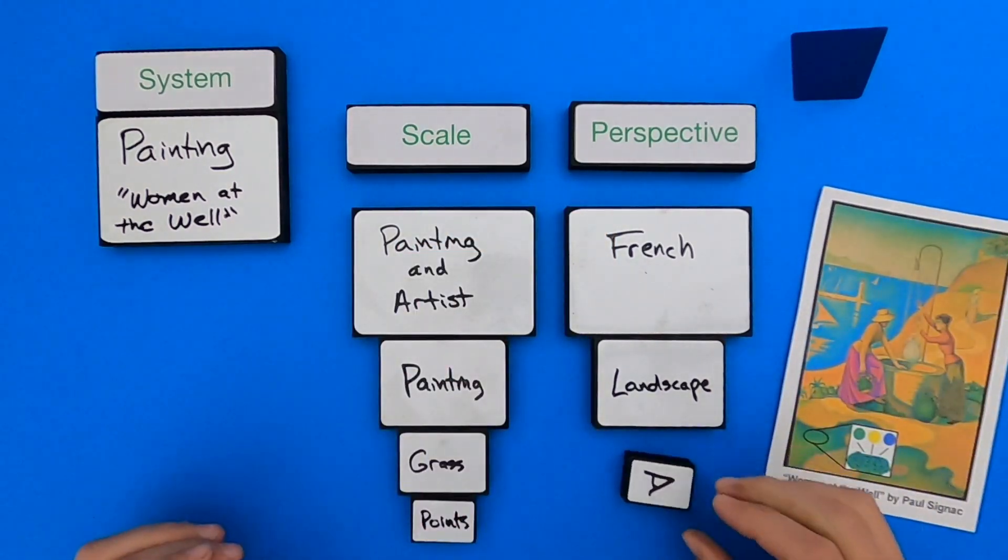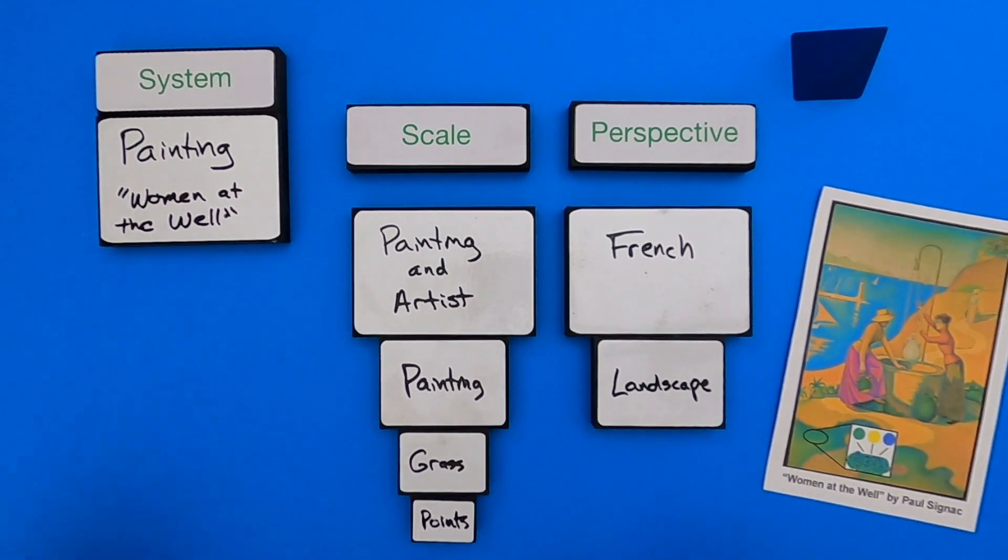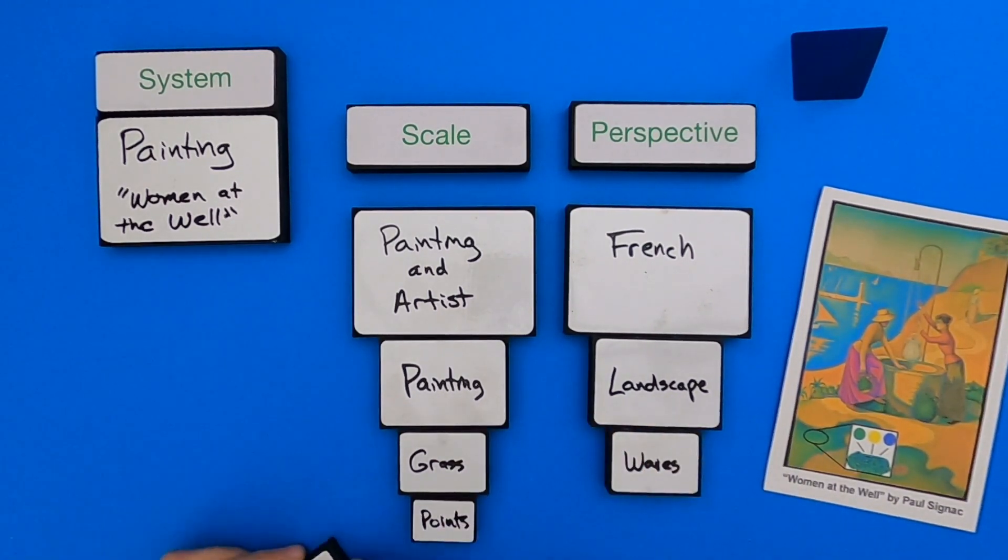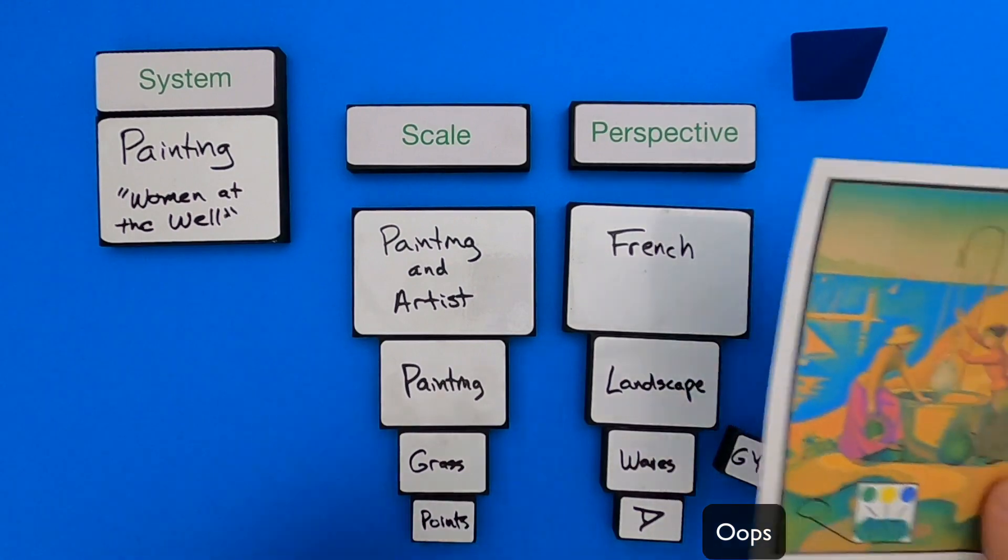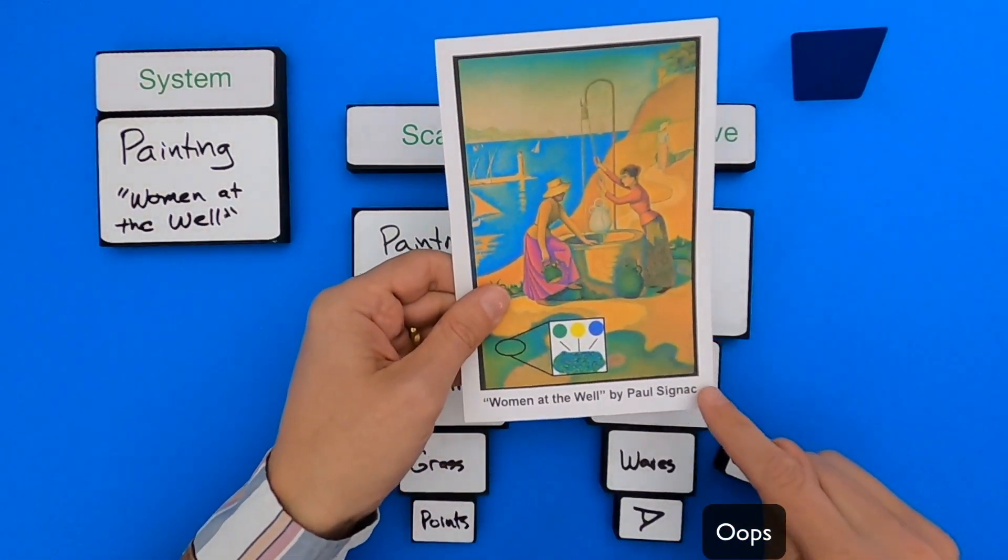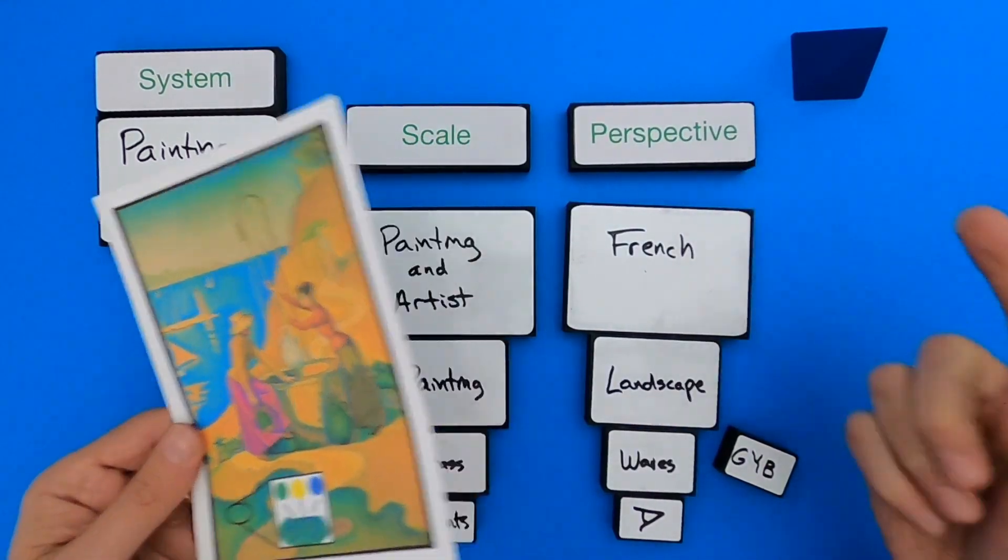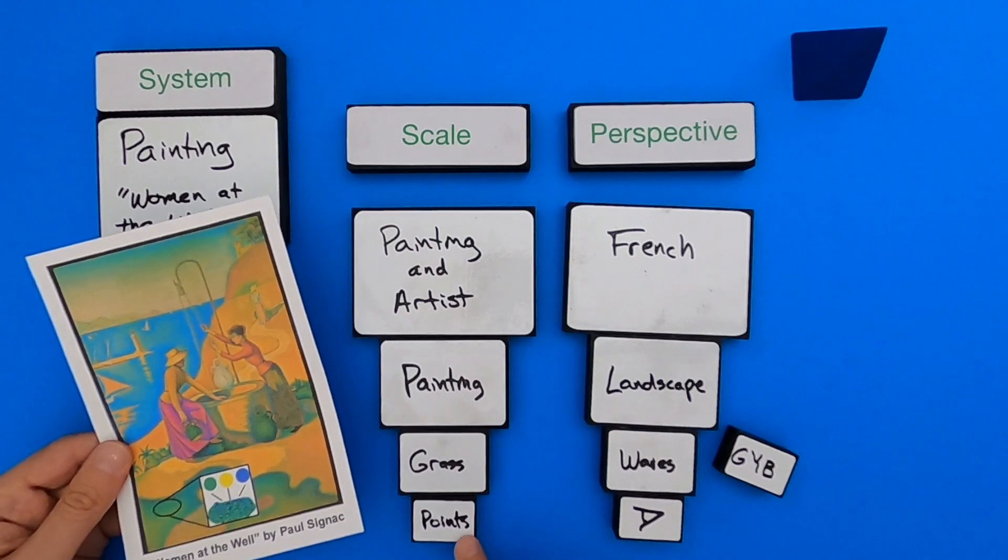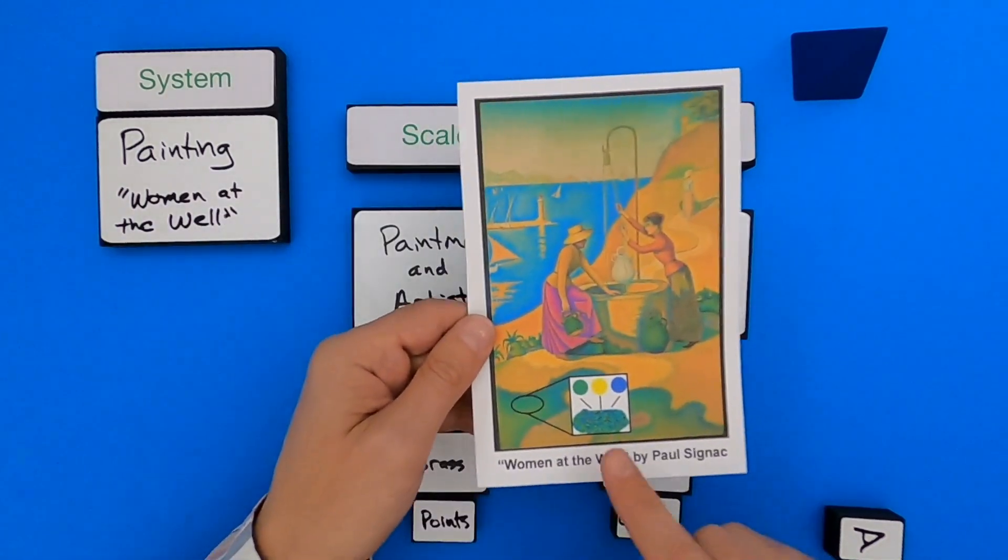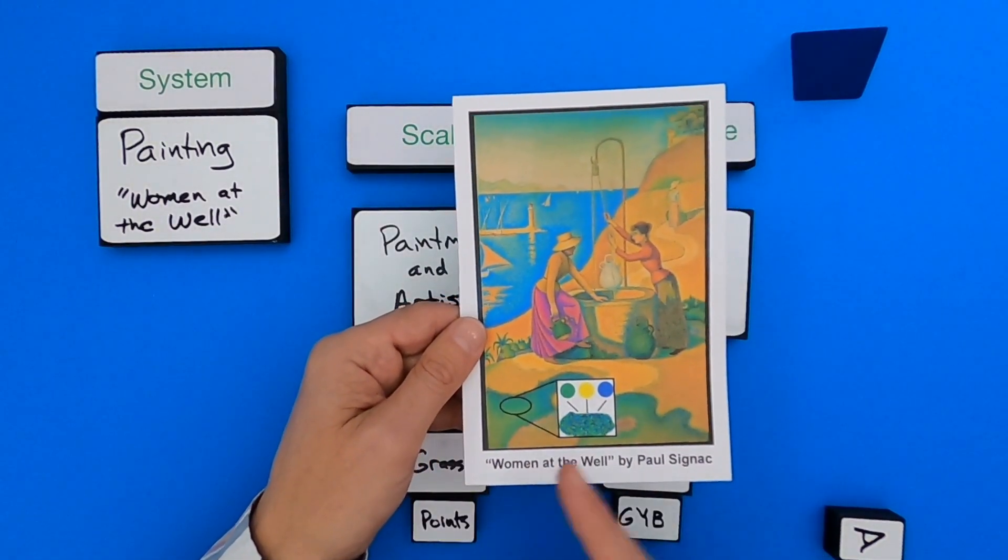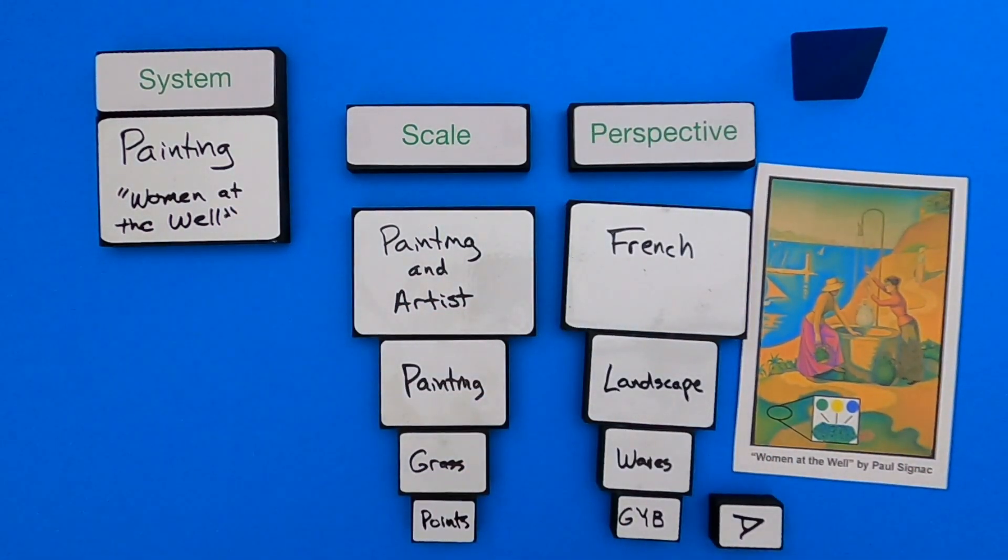And so now I maybe go down to a smaller level, and I'm going to look at the level of the grass, and then maybe at the level of the point. So let me fill that in. So at the level of the grass, I notice that the grass has these waves in it, which kind of match the waves that you have in the ocean. So that gives me a new perspective on the painting. And another thing I notice is that when I'm looking at the scale level of the points, one thing I notice is that I only see three colors of points. And so I see green dots of paint, yellow dots of paint, and then blue dots of paint.